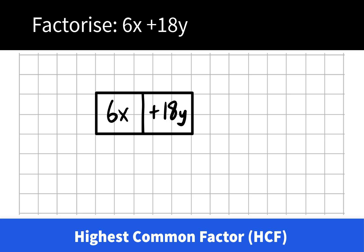They have no letter in common, but 6 and 18, the highest common factor of these numbers is 6. 6 multiplied by x gives us 6x, and 6 multiplied by plus 3y gives us 18y. So we could say the factors of 6x plus 18y are 6 groups of x plus 3y.